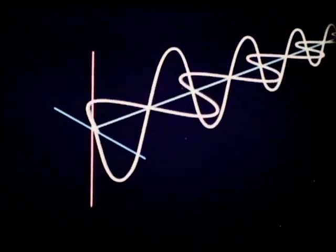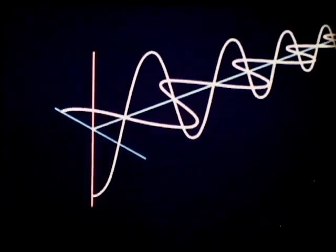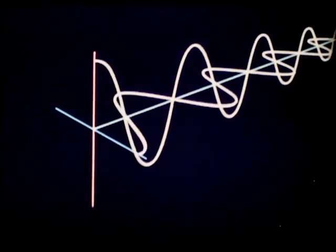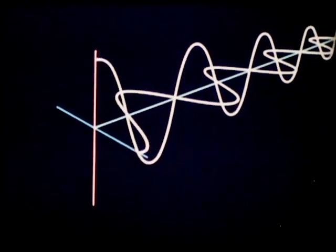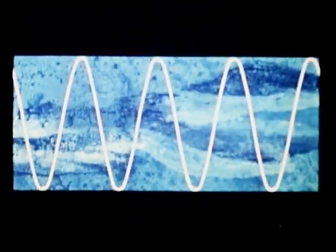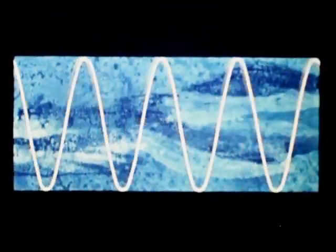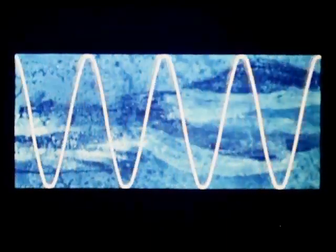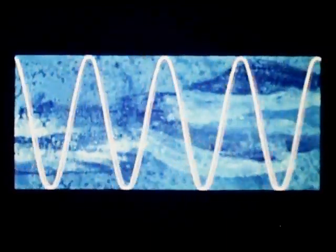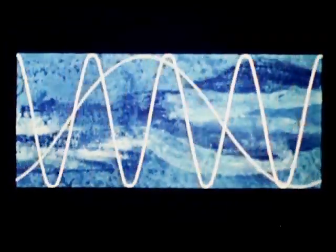All electromagnetic waves consist of these two associated fields and are propagated in space at the velocity of light. The simplified representation here shows the relation between frequency and wavelength. At a lower frequency, the field alternates at a slower rate, with the result that the wavelength is longer. The part shown here contains exactly one complete field alternation, which corresponds to one wavelength.